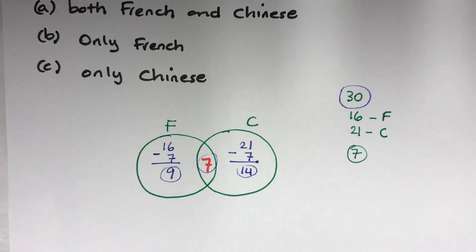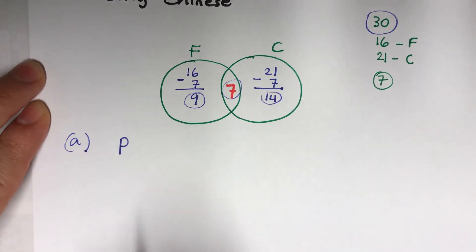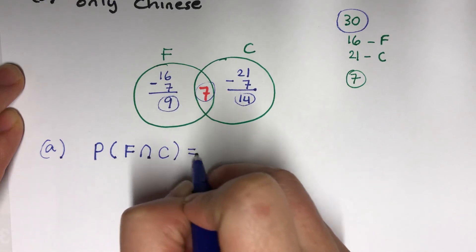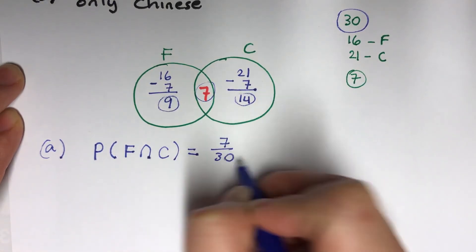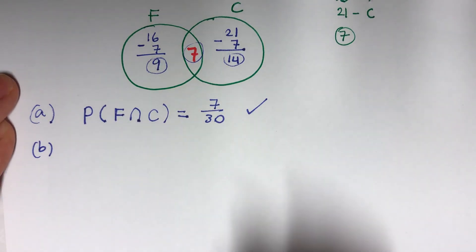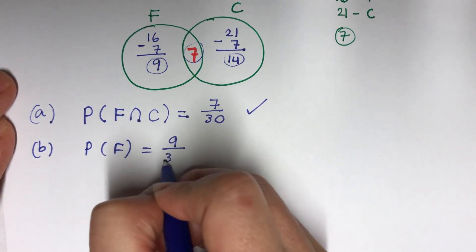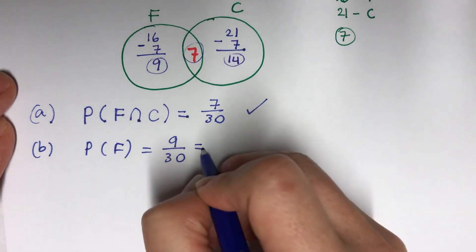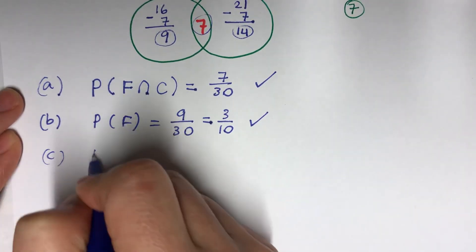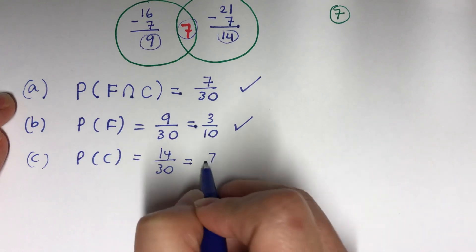Let's have a look. (a) I want probability of French and Chinese, which is 7 out of 30. That's easy after you've done this Venn diagram. (b) Only French: we already did that one, so 9 out of 30, which simplifies to 3 over 10. (c) Only Chinese language: that's 14 out of 30, simplified to 7 over 15.